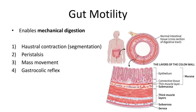These movements help water absorption. The second movement is peristalsis, which is much slower than in the small intestine. Third, mass movement represents strong waves which begin in the transverse colon. These quick waves push the content toward the rectum, and these movements occur about three times per day, usually after a meal.